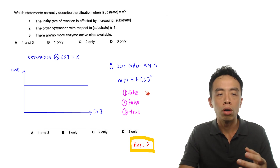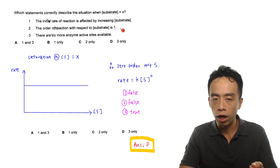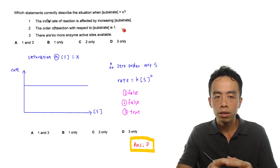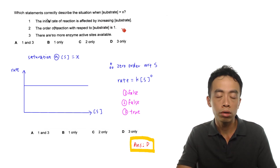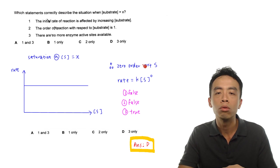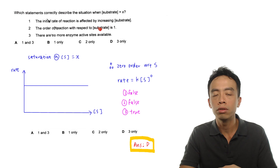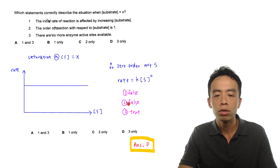Statement two: the order of reaction with respect to substrate is one. This is not true, because since the rate of reaction is not affected by substrate concentration, we can say this is zero order with respect to substrate. Therefore the order of reaction with respect to substrate concentration is not equal to one — it is zero. Statement two is false.